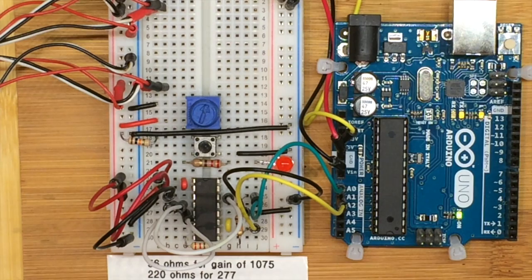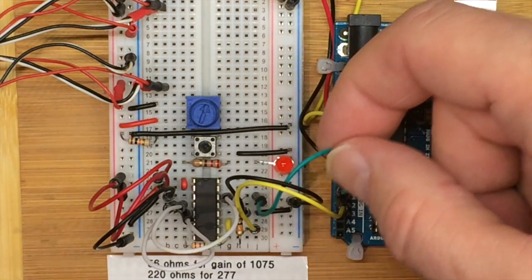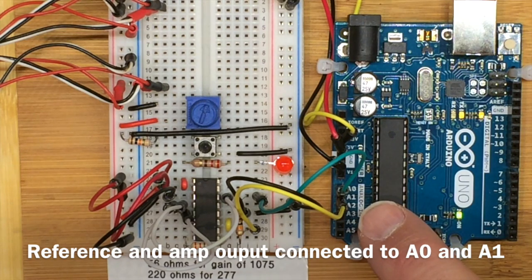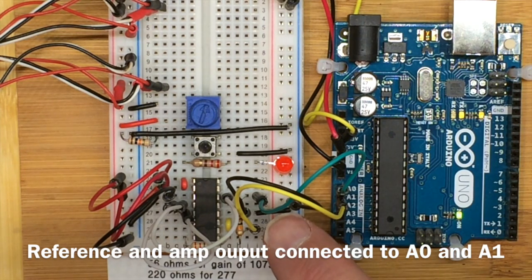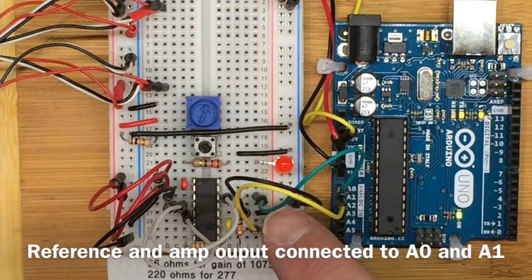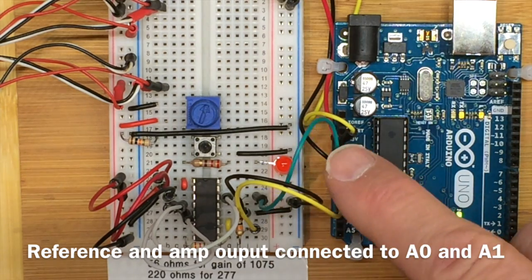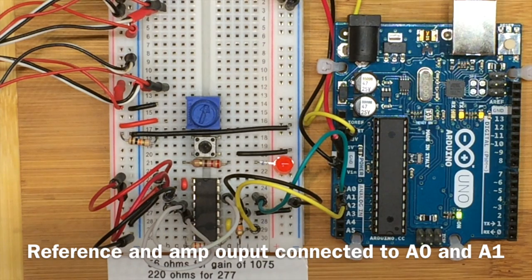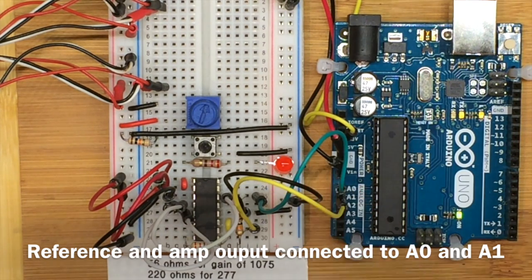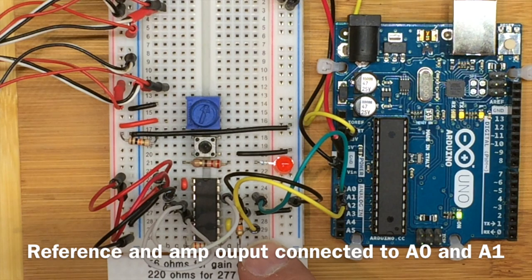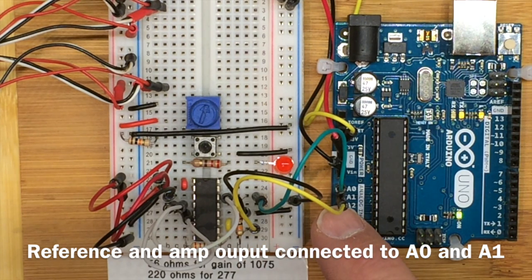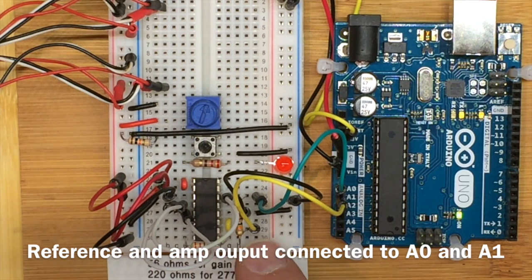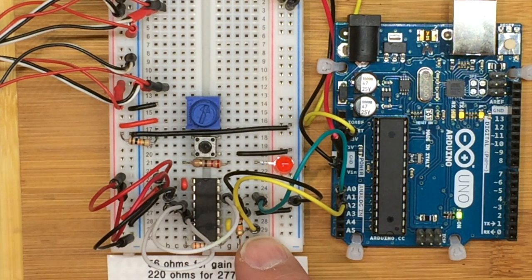For recording data on the Arduino, I've got this green line connected to analog pin A0, and it's coming from my reference voltage at 2.5 volts. So that's going to give me a constant measurement of just what the reference voltage is. The yellow line is coming from pin 10. That's the amplifier output. So that's going to give me the information about how much input is being applied to the amplifier and what the output voltage is.